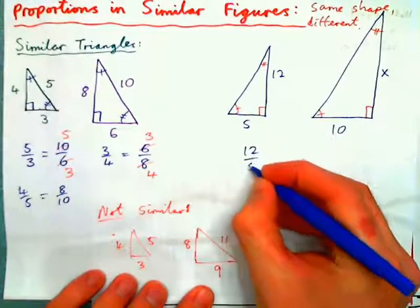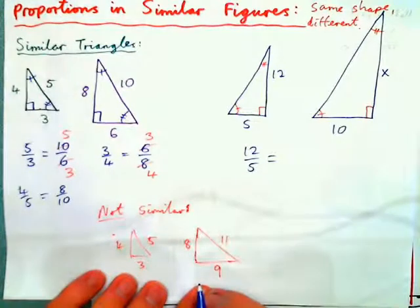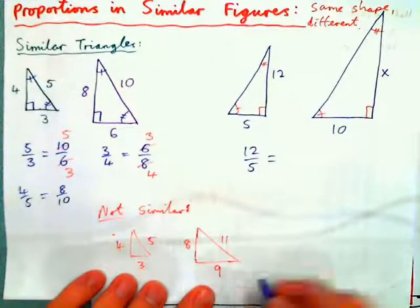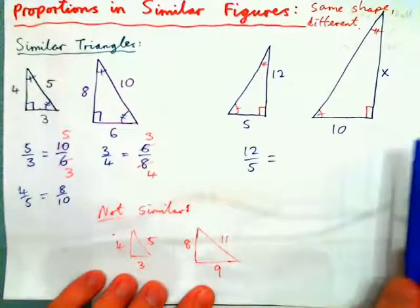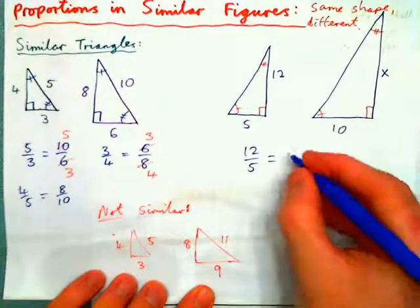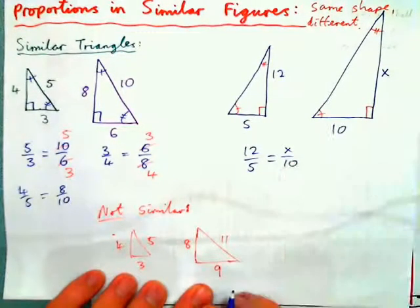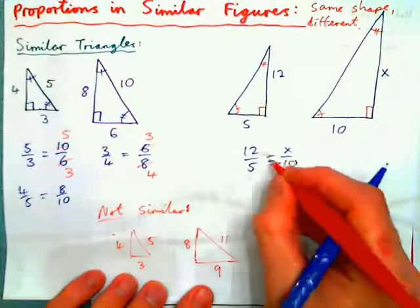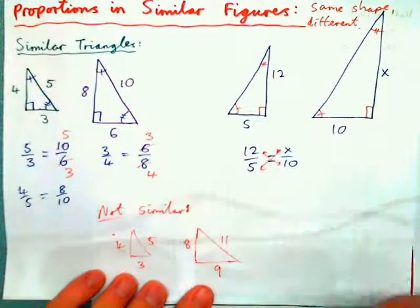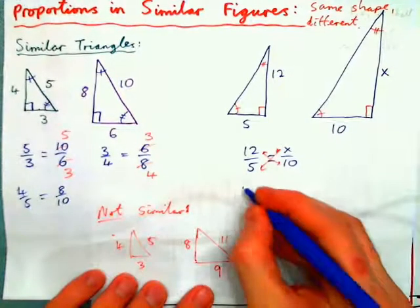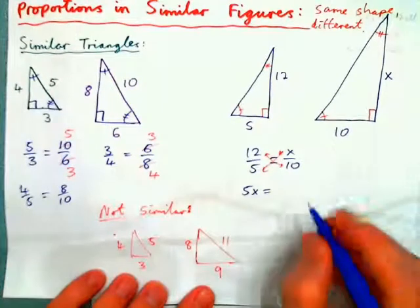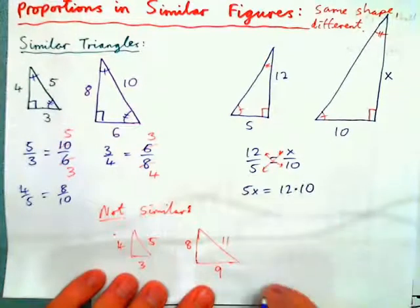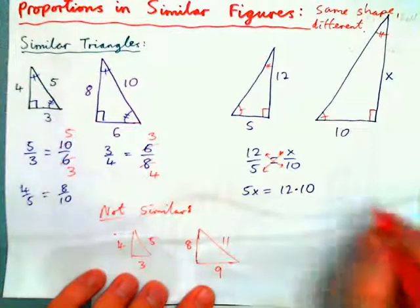For example, we could say 12 over 5 equals x over 10. This side over this side equals this side over this side. And how would you find x? Cross multiply. So 5x equals 12 times 10, or 120.